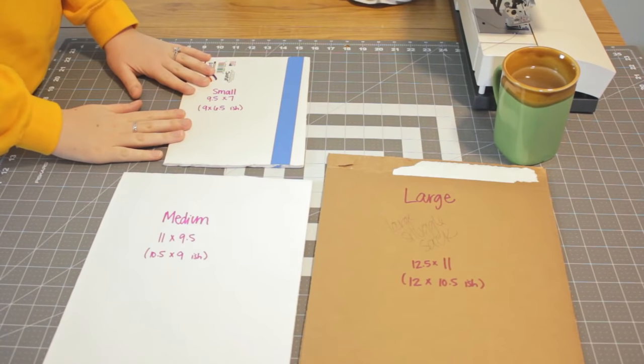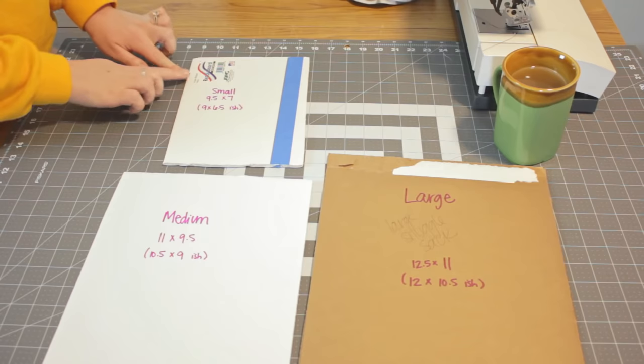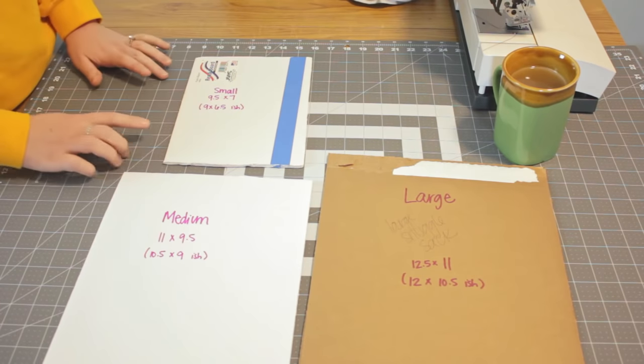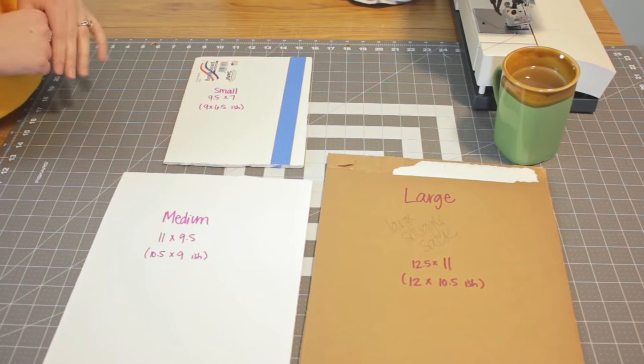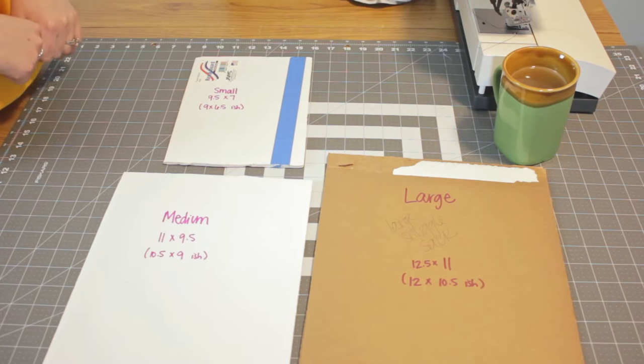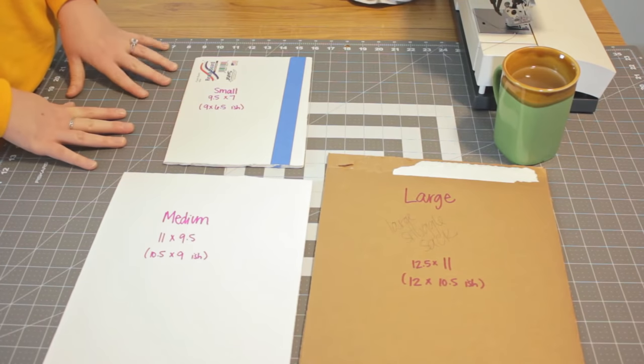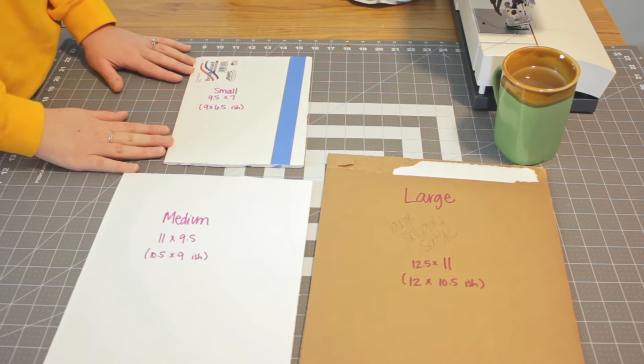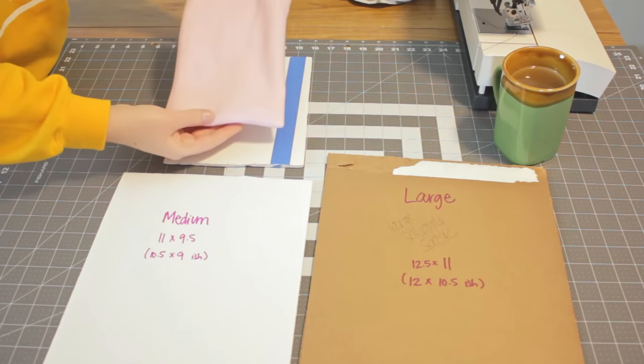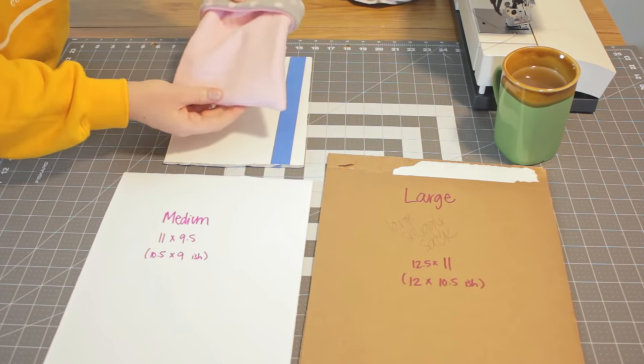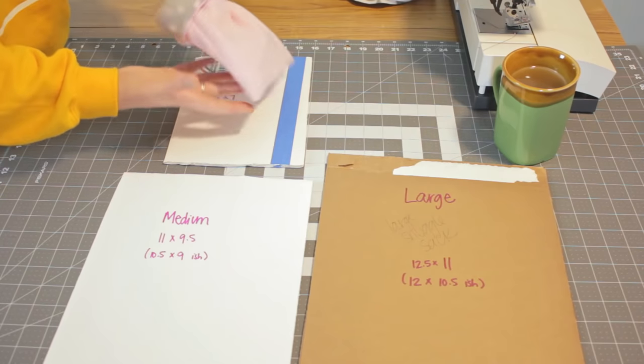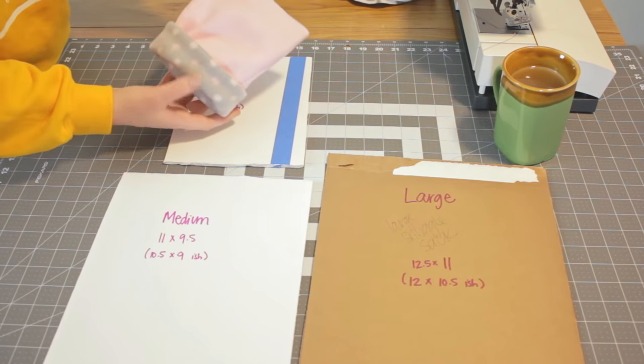This is my small size. It measures nine and a half inches tall by seven inches wide. And we'll use a quarter inch seam allowance. You can use a half inch seam allowance if you want. If you use a quarter inch seam allowance, this finishes at being a nine by six and a half inch snuggle sack. So this would be for a really small animal, like a small hamster or a sugar glider.